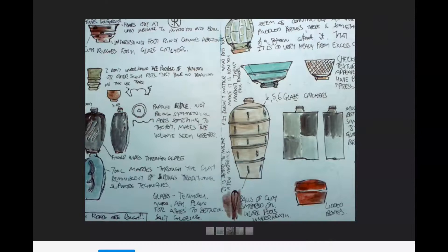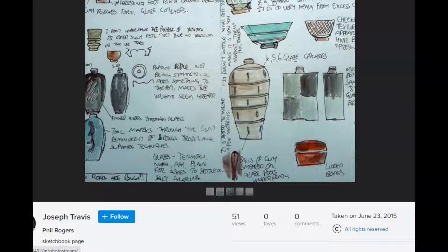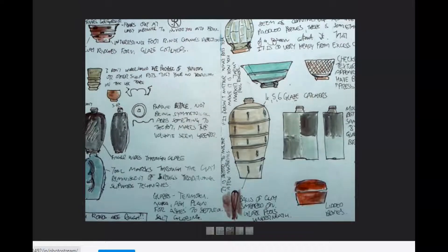Here's another nice one where it has some images and some words and it's maybe watercolor. I'm not exactly sure. This one's called Notes on Phil Rogers. I think this is by Joseph Travis. I liked it as an example of simple drawings and words as well.